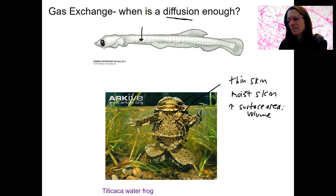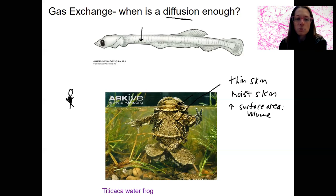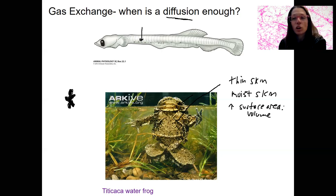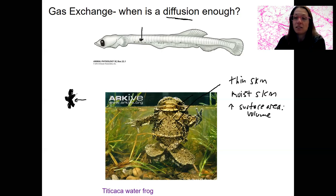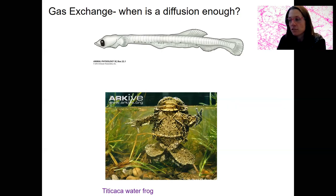Larger animals can't do this. Humans are more like this — we're not sticks. We've got a bunch of muscle and bone and organs in there. The surface area of this organism is much lower compared to the volume, so we can't rely on diffusion across the skin. Along with the fact that our skin has different features that make it thicker. So we need a special respiratory organ to help us obtain oxygen and get rid of carbon dioxide.